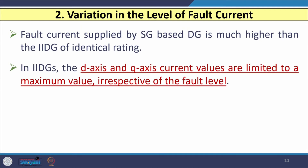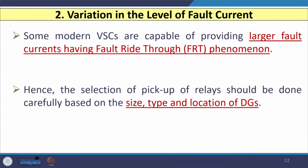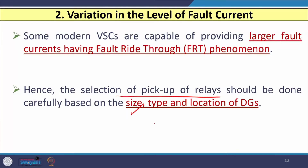The second issue is variation in the level of fault current. The fault current supplied by a synchronous generator-based distributed generator is much higher than that of inverter-interfaced distributed generators of the same rating. In inverter-interfaced DGs, the d-axis and q-axis current values are limited to a maximum value irrespective of fault level. When selecting relay pickup settings, we must carefully consider the size, type, and location of the distributed generators.